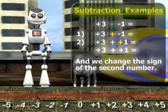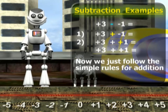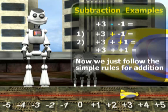We now have positive three plus positive one. Now we just follow the simple rules for addition. Three plus one is four.